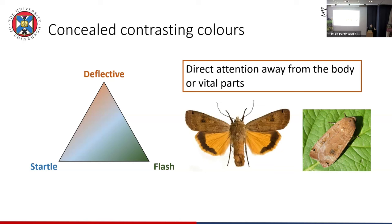The first potential explanation is called deflective colours. The large yellow underwing is very camouflaged at rest and suddenly becomes disturbed by a bird. It flies off, flashes these yellow colours, and the bird's attention is immediately drawn to the yellow colours. When it attacks, that's where the attack is directed — it directs the attack away from the key parts of the body.